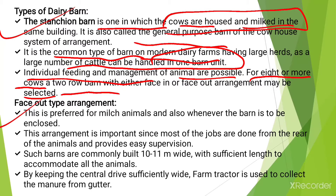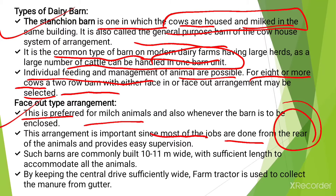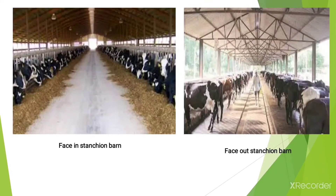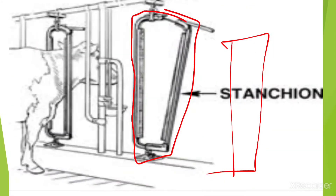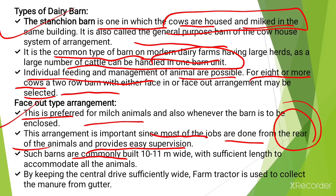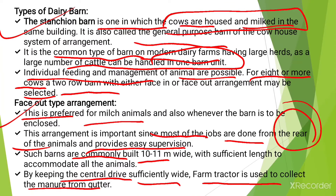The face-out type arrangement is preferred for milch animals and also whenever the barn is to be enclosed. This arrangement is important since most of the jobs are done from the rear part of the animals and it provides easy supervision. In this system, the faces of the animals are on the outside of the dairy barn. Such barns are commonly built about 10 to 11 meters wide with sufficient length to accommodate all the animals. By keeping the central drive sufficiently wide, a farm tractor can be used to collect manure from the gutter.